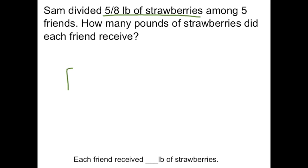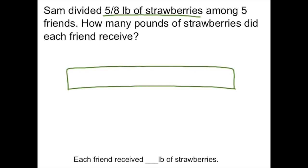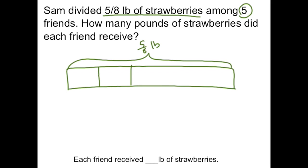We know that Sam's starting with five-eighths pounds of strawberries because it says that he divided that amount amongst his friends. So I'm going to start by drawing my whole bar and label it five-eighths pounds. We're also told that that was split among five friends — one, two, three, four, five. Five friends received that five-eighths of strawberries split up equally. I want to know how many pounds of strawberries each friend received.